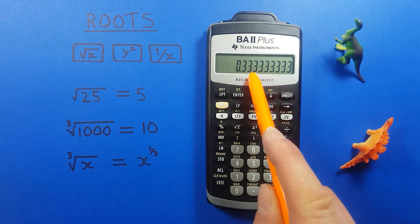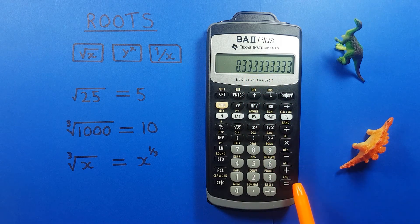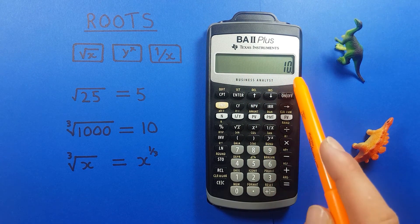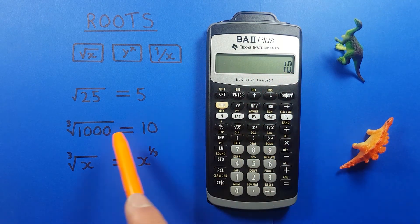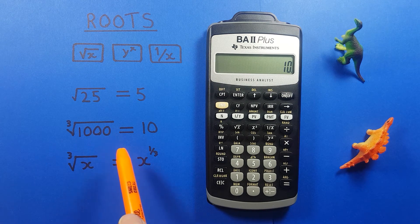so that we get that 3 turned into 1 over 3, and then we press equals and we see we get the result. So the cube root of 1,000 is equal to 10.